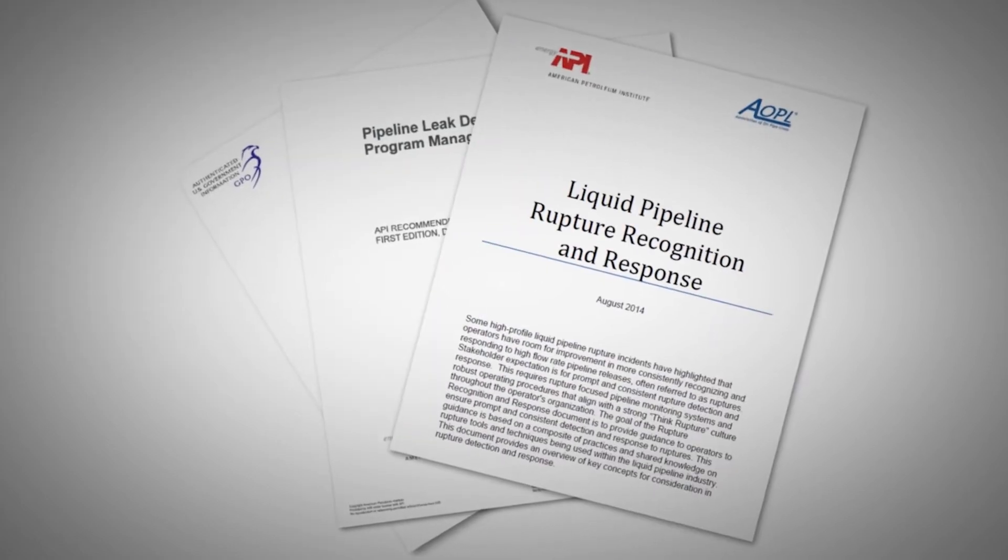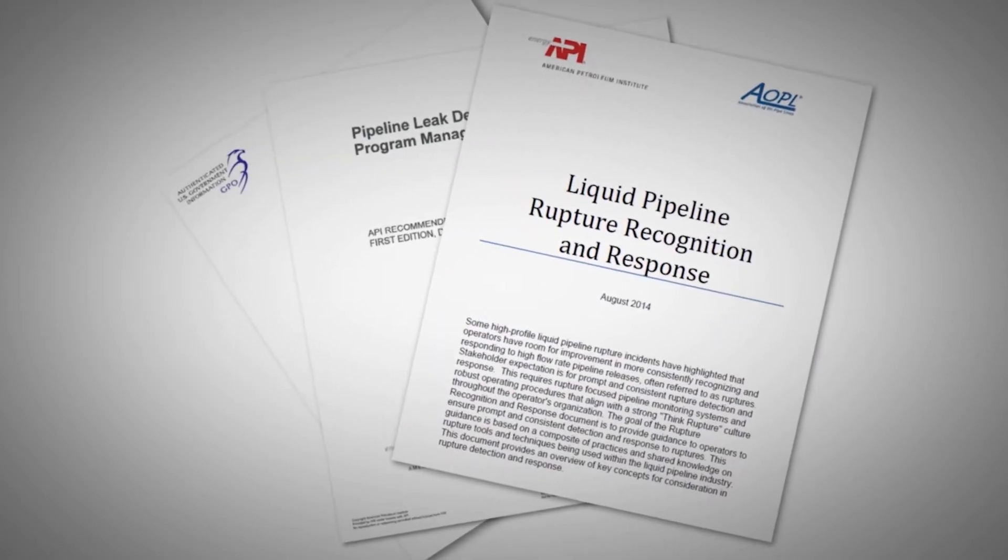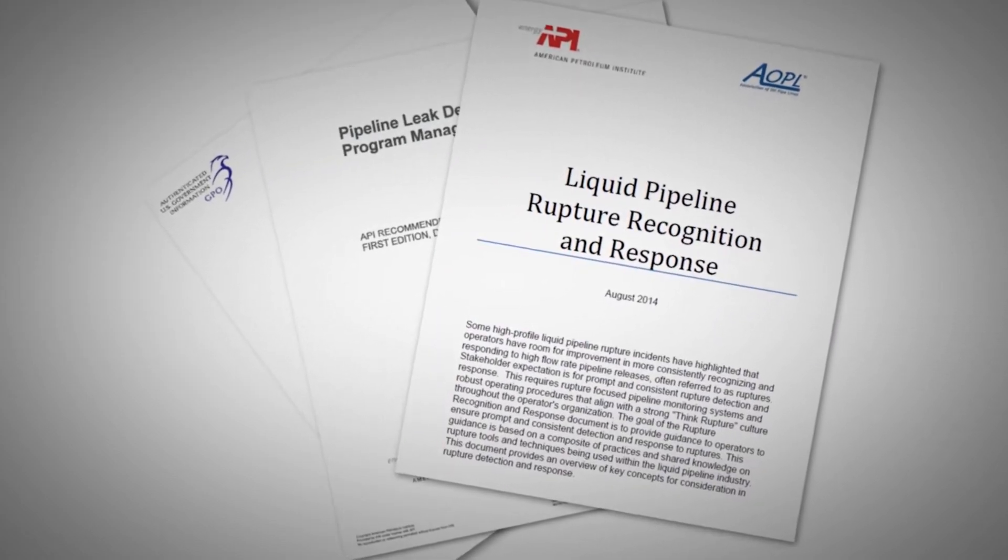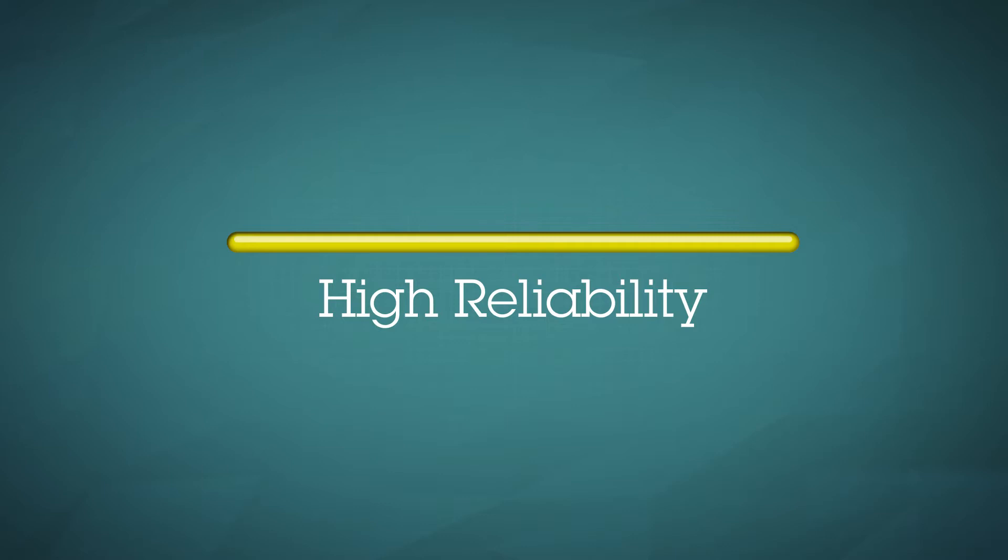Recent standards, such as the API white paper on rupture recognition and response, recommend that rupture alarms should not be treated like leak alarms. Any rupture detection system must be extremely reliable if operators are to have confidence in rupture alarms to initiate accelerated or automated shutdowns. No false alarms are acceptable.